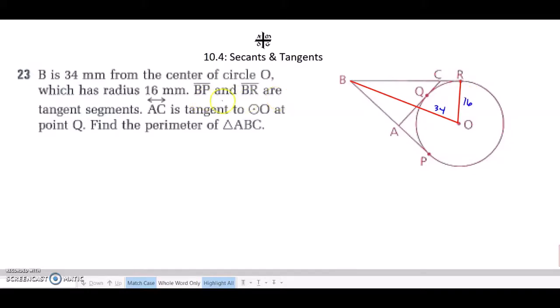We're told that BP and BR are tangent segments. So if a radius is drawn to a tangent, it's perpendicular. And we also know by the two tangent theorem that from an external point, if two tangents are drawn to a circle, then they are congruent.